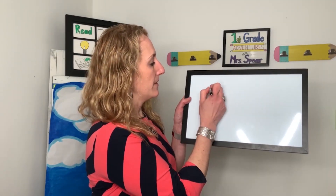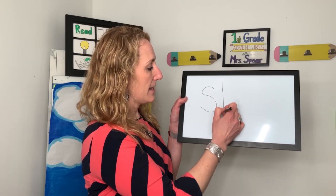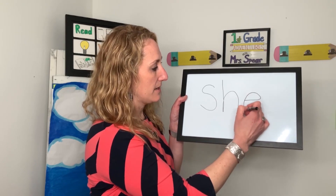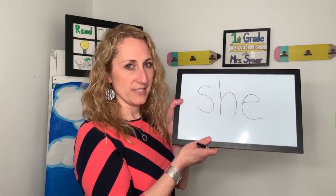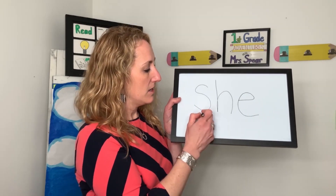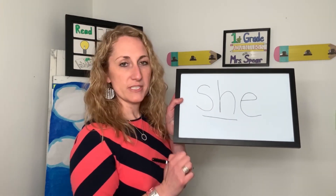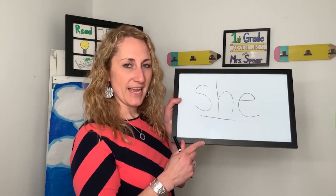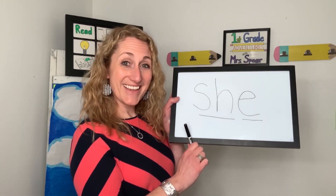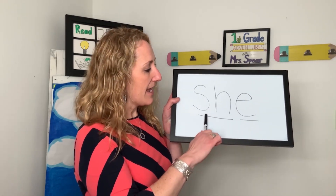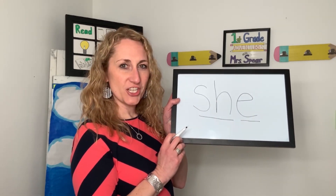Let me show you what the word she looks like. I'm going to write it on my whiteboard. Here we go. S-h-e. She. Here's how the sounds work with these letters: the S and H represent the sh sound, and the e represents the ee sound.